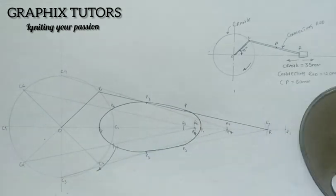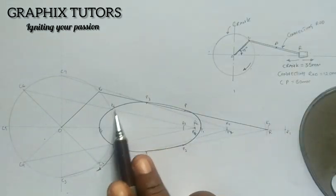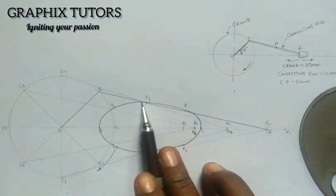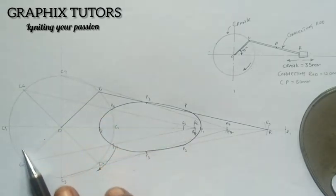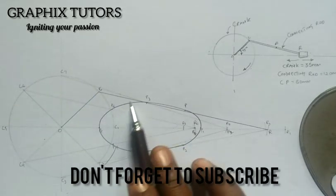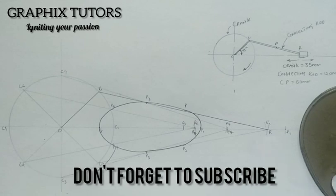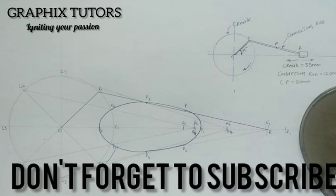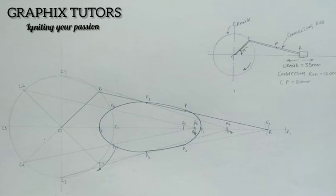So this is the locus of P, the path at which P will form as it moves, as this crank goes in a clockwise manner. So this is the path that P will form. So thanks for watching, we will meet you in the next video.